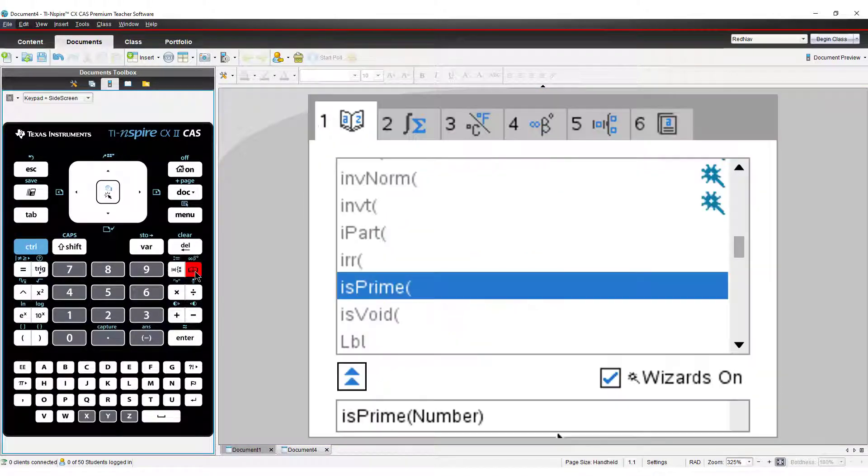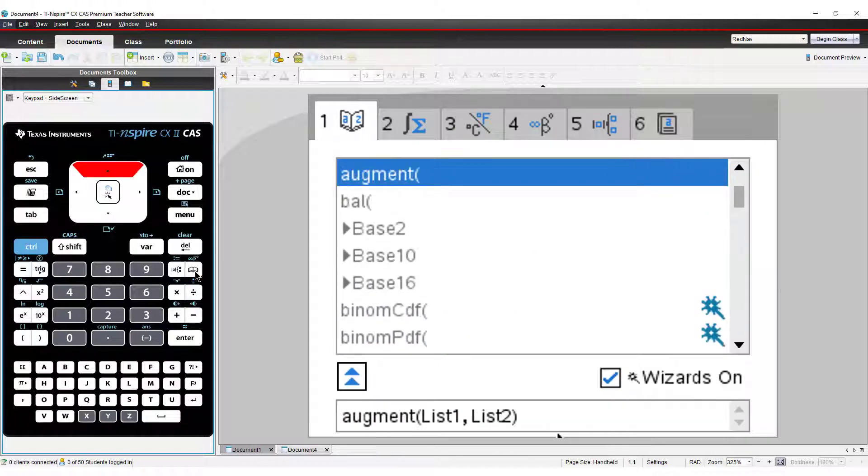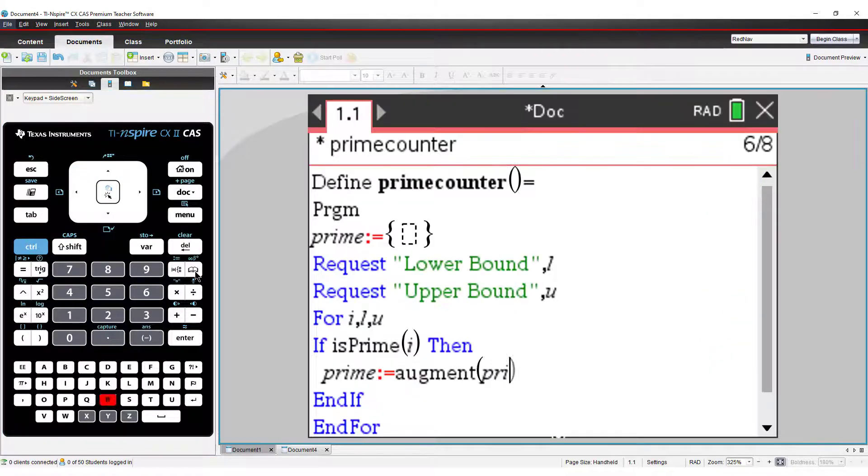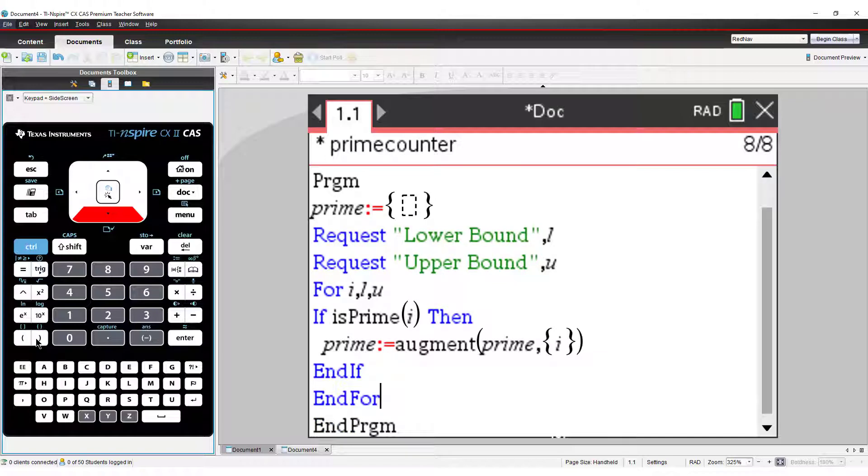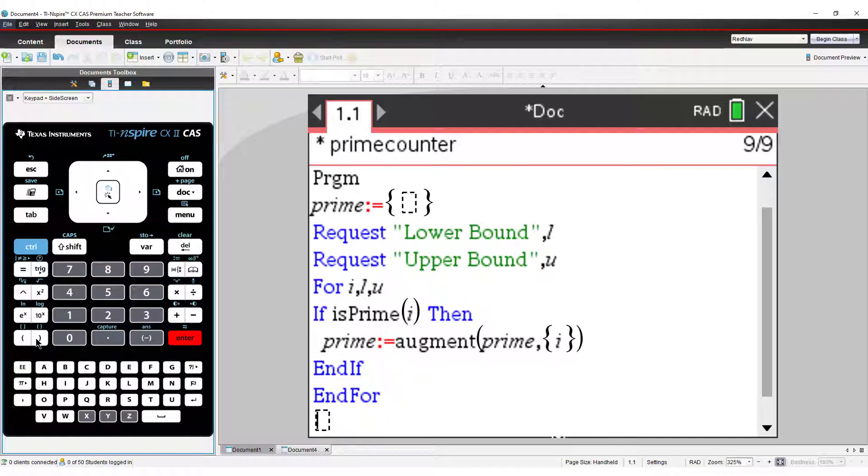Now if the number is prime, I want to store it in my list of primes. For this I will use the augment command. Augment allows me to combine two lists. So my prime list will be augmented with the current list of primes and my latest find, which must be written as a list.